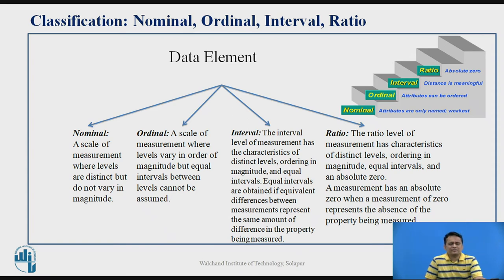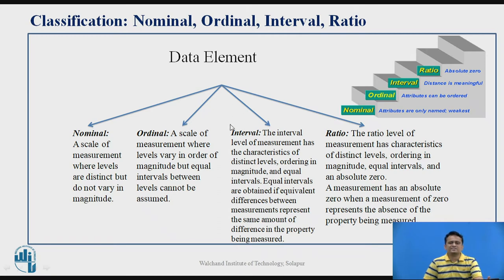When we talk about different scales, data may be available basically in two formats: qualitative data or quantitative data. Qualitative data can have two different scales — nominal scale, where names are used, or ordinal scale, where names can be ordered. Quantitative data can also have two scales — interval scale, where distinct values exist and the difference between two values is equal, and ratio scale, where distinctiveness, ordering, and absolute zero are all possible.